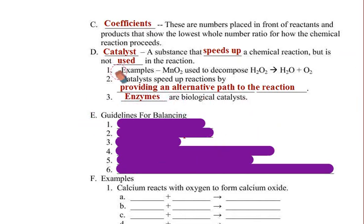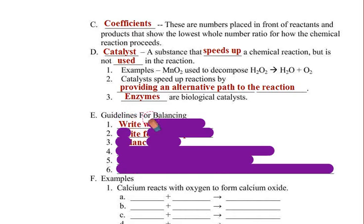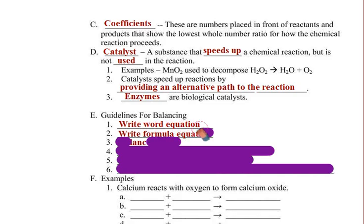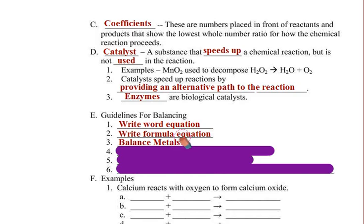There are some steps we need to follow when balancing equations. If we're starting from scratch, we write a word equation to begin with. Then once we have the word equation, we write the formula equation — like what we did with aluminum and oxygen making aluminum oxide. Once we have our formula equation, the chemical formulas are locked in. You don't change them, you don't change subscripts or anything like that.